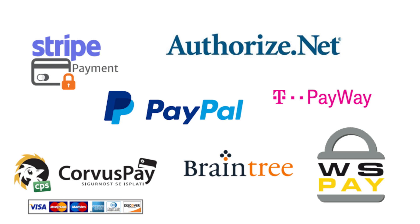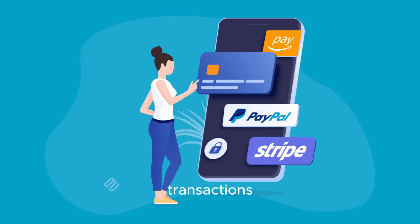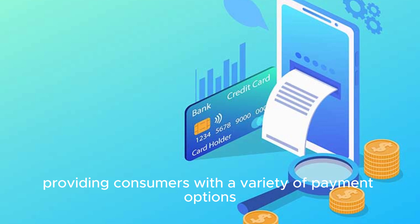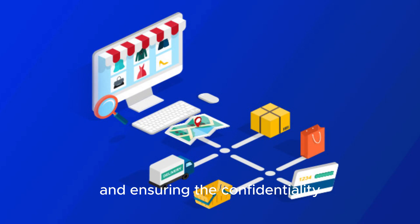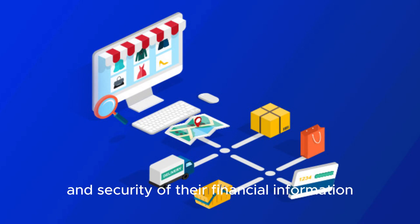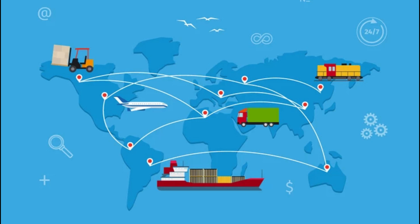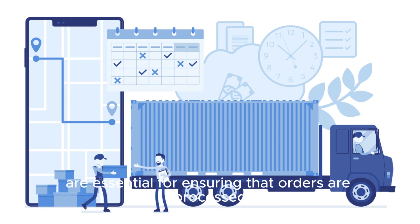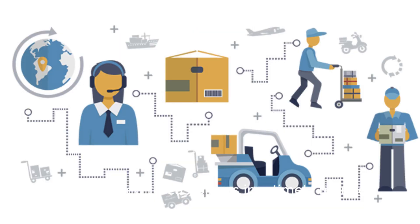Payment Gateways: Secure payment gateways facilitate the seamless processing of online transactions, providing consumers with a variety of payment options and ensuring the confidentiality and security of their financial information. Logistics and Fulfillment: Efficient logistics and fulfillment operations are essential for ensuring that orders are processed accurately and delivered to customers in a timely manner, regardless of their location.